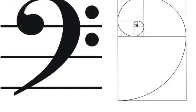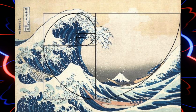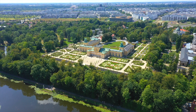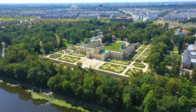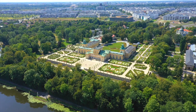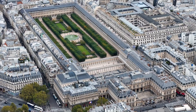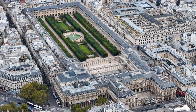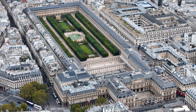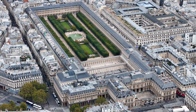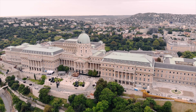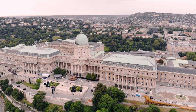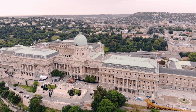So many artists, mathematicians, and architects have been incorporating the golden ratio in their work for centuries, using this ratio to create visually balanced and aesthetically pleasing compositions that resonate through human perception.